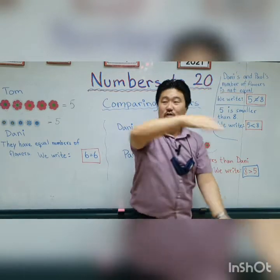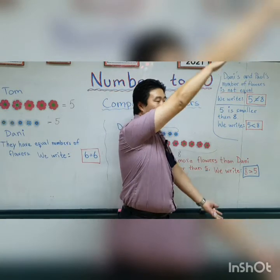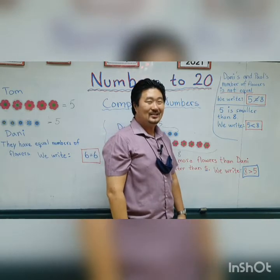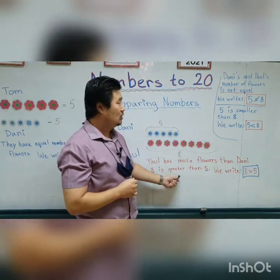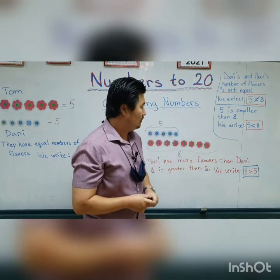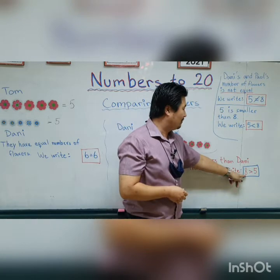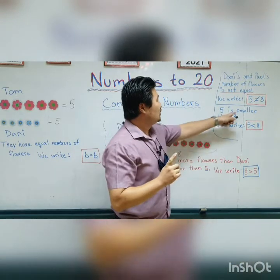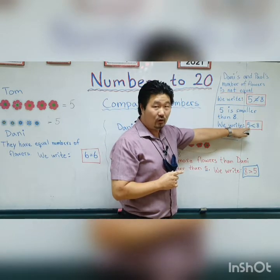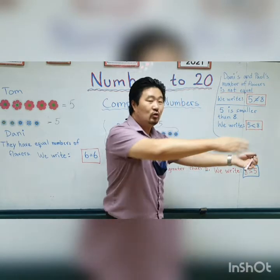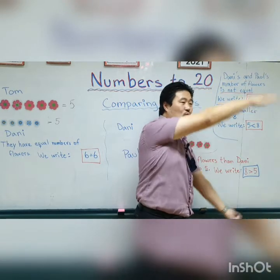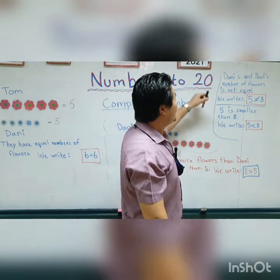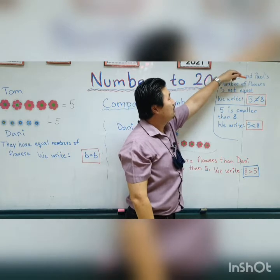So you have to pay attention to whether it's greater or smaller. If it's greater than, you start with the bigger number first and then the crocodile mouth eats the bigger number. But if it's smaller than, you write the smaller number first and then the bigger number, with the crocodile mouth pointing towards the bigger number.